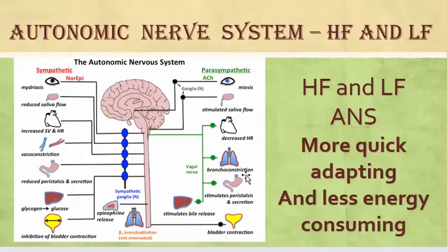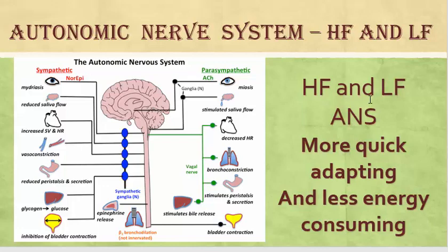The autonomic nervous system is divided into two parts: sympathetic and parasympathetic. Sympathetic is stimulating for some organs, and parasympathetic is more down-regulating some organs — it is vagal. This is why the autonomic nervous system more quickly adapts to changes, because it sends information through the nerve system directly to specific organs. It is less energy-consuming compared to hormonal regulation.